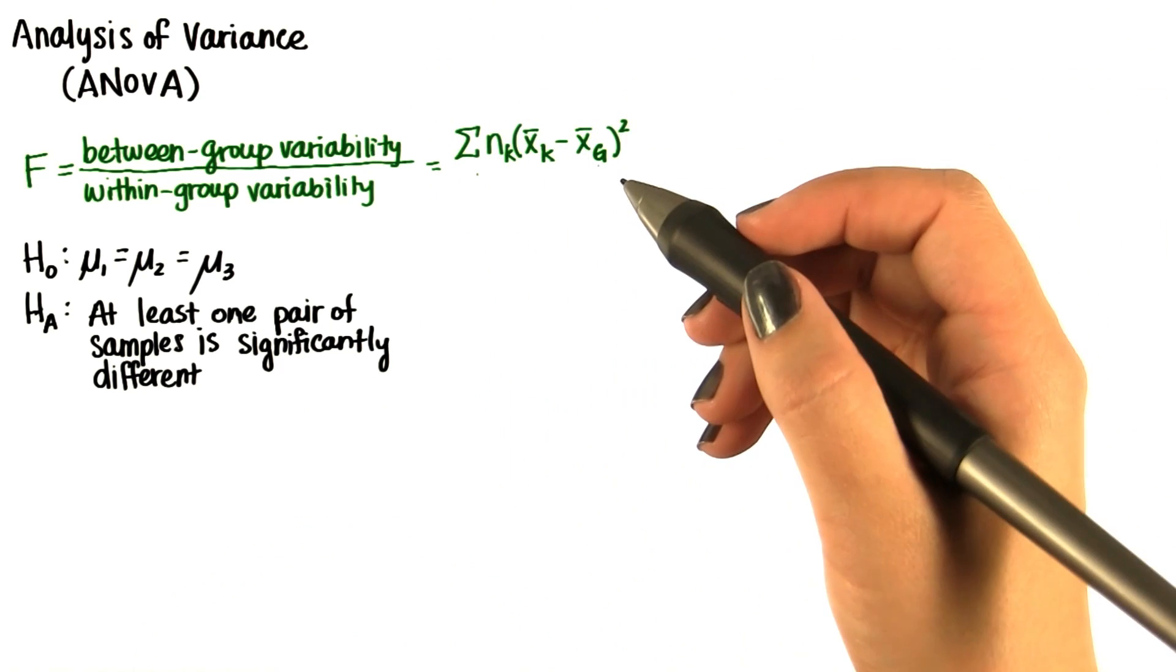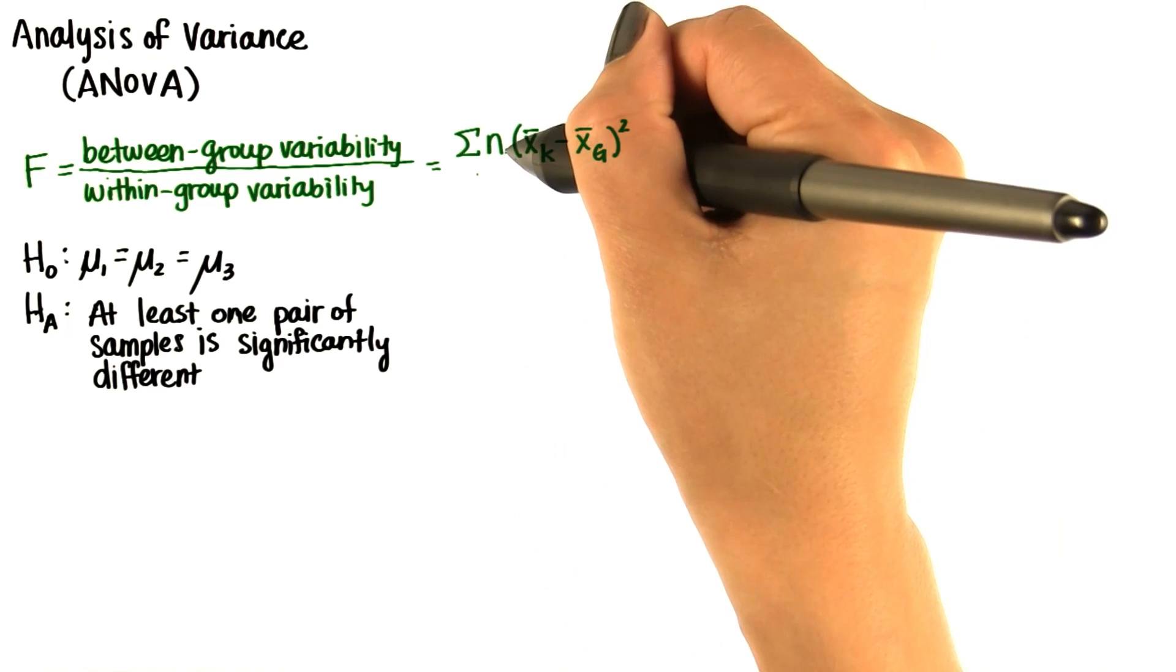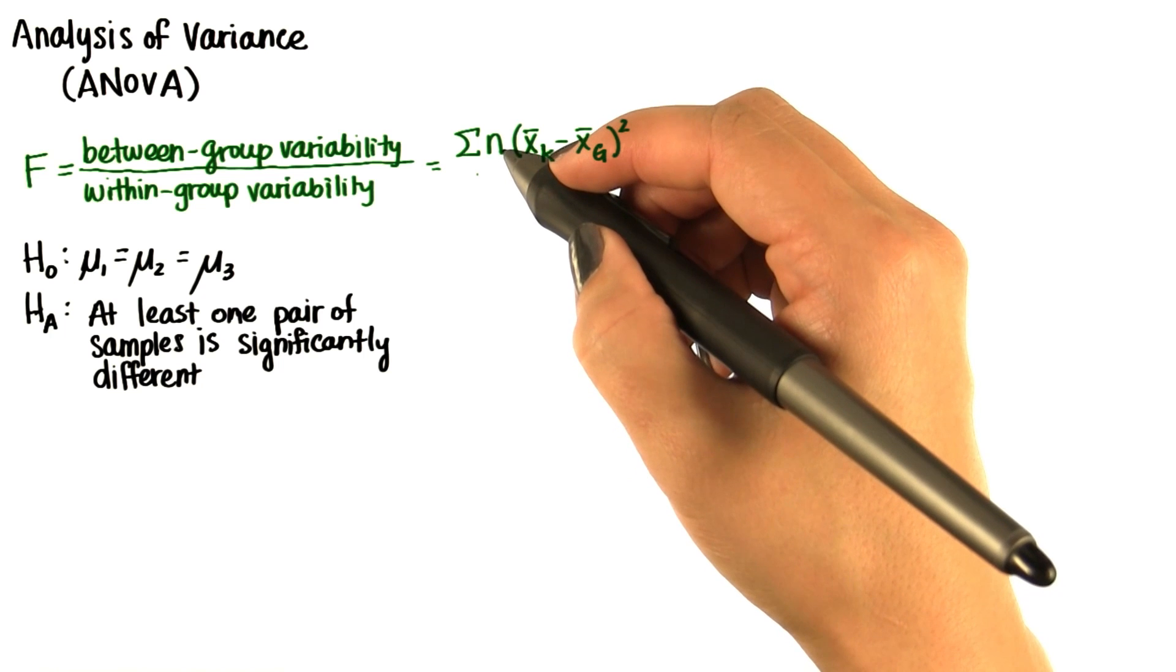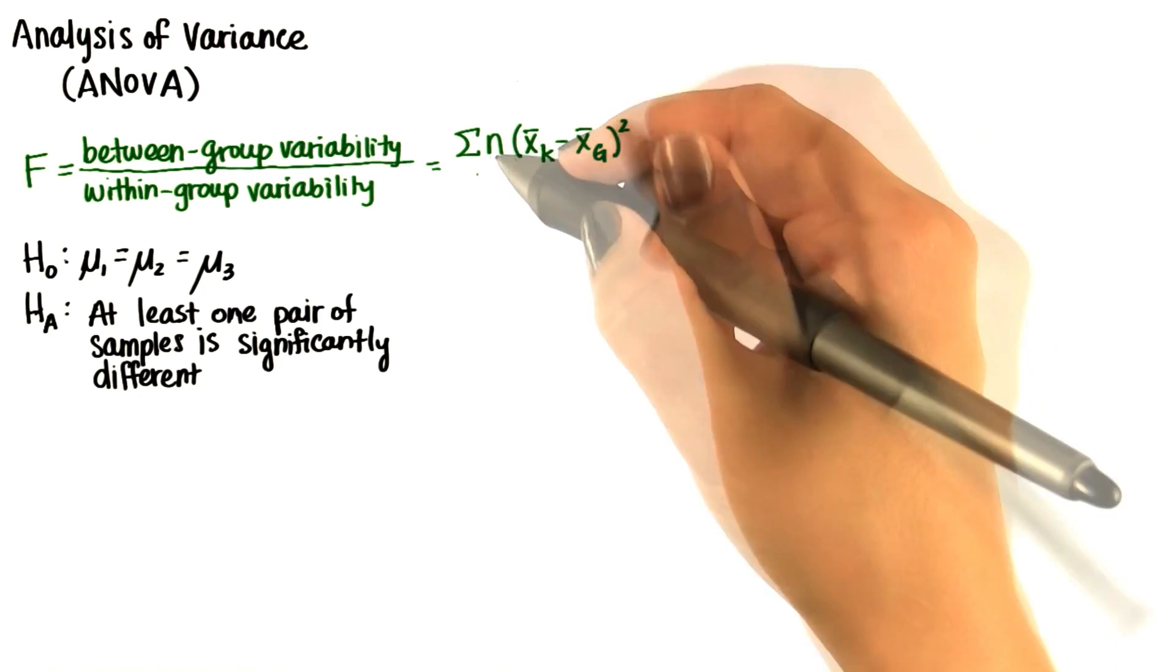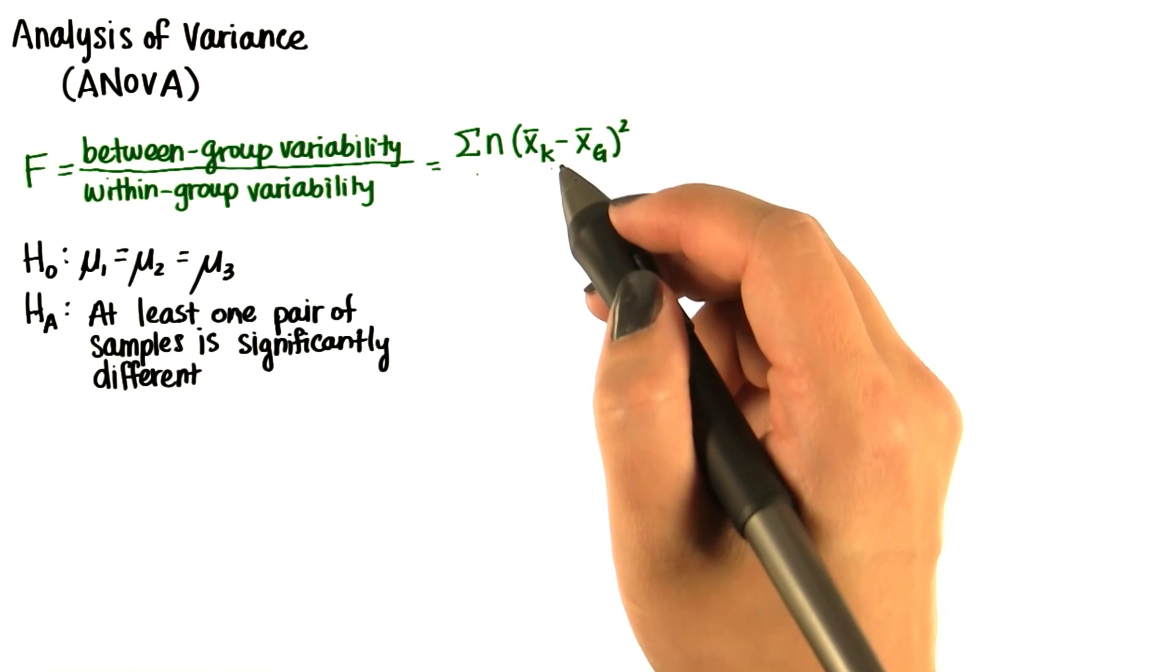In this lesson though, we're assuming that all samples have the same size, so we can get rid of the k. n is just a constant across all samples. That means that we can write the numerator between group variability like this.